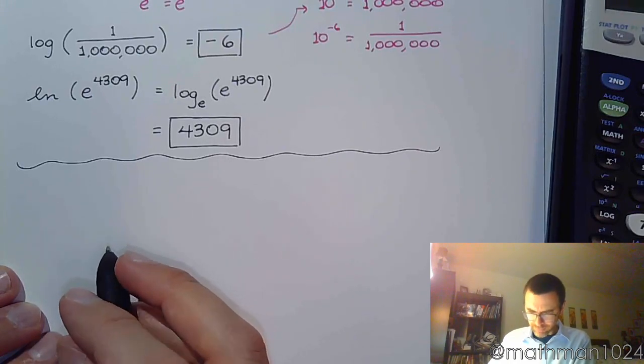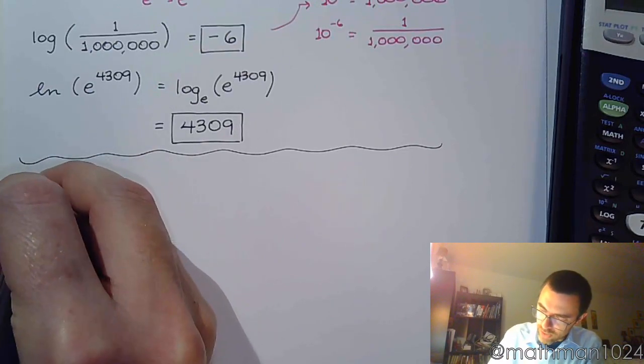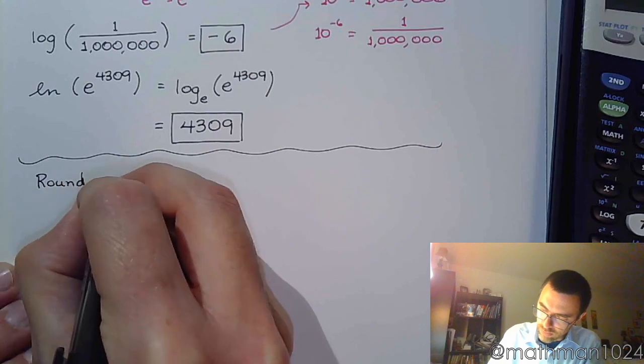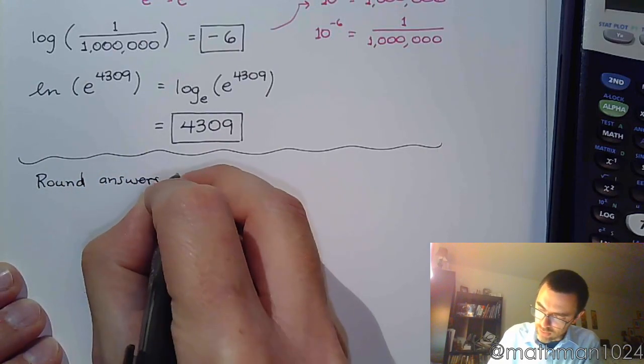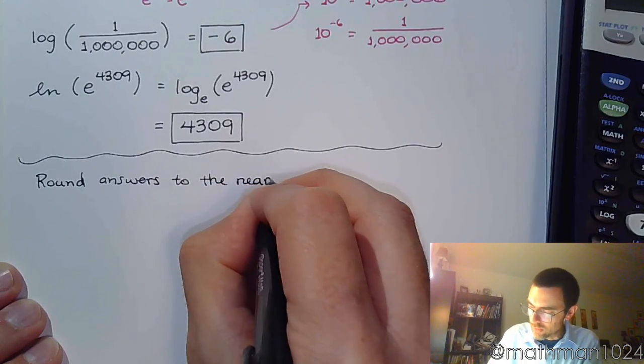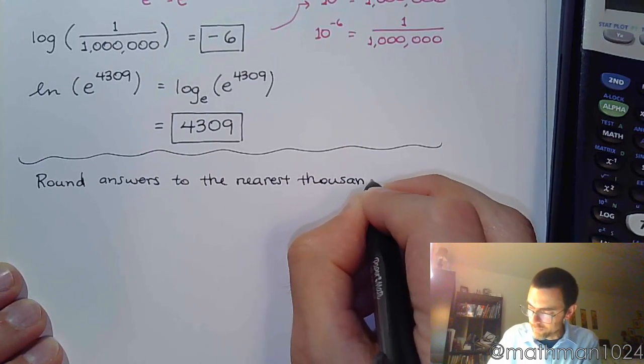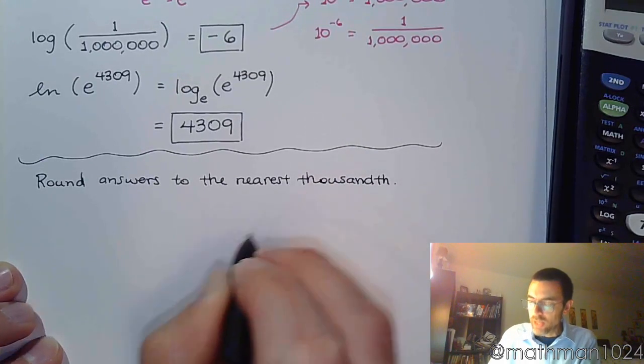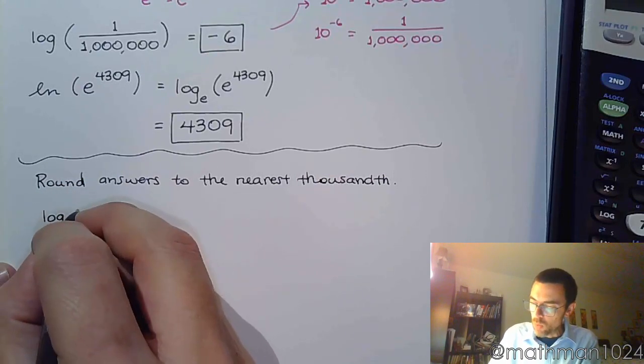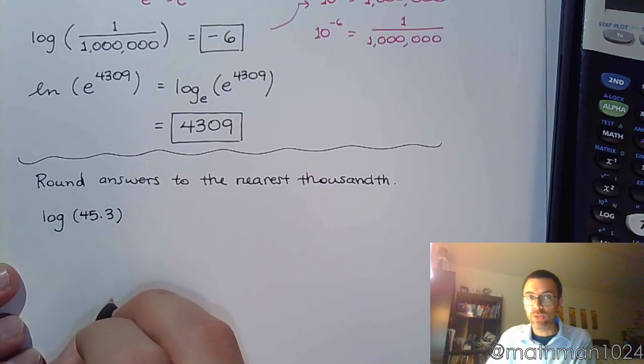Now for these next pieces, these next problems, I want us to use the calculator because we need to, and I want us to round answers to the nearest thousandth. Sometimes in my math lab, they're going to say round to four decimal places. Whatever they say is what you do. So make sure that you read correctly and that you round correctly.